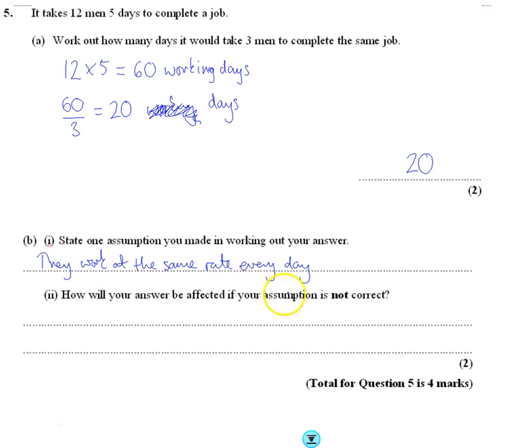So, how will the answer be affected if your assumption is not correct? Well, for example, if they worked faster, the job will get done quicker, or the other way around, if they work slower, then the job will take longer. So, if they don't manage to keep up their pace, maybe they get tired and go a little bit slower, then what's going to happen is the job's going to take longer.